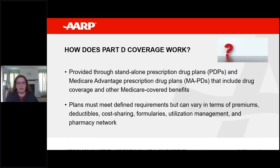There are actually two types of private plans that provide coverage under Medicare Part D. One is a standalone prescription drug plan, or PDP, that just provides coverage for prescription drugs. The other is a Medicare Advantage prescription drug plan, which provides drug coverage plus other Medicare benefits. The plans have to meet some defined requirements, but there is a lot of variation between plans — premiums, whether the plan has a deductible, the types of cost sharing, whether it's a flat co-payment or co-insurance where you pay a percentage of the drug's price, the formularies, which drugs are covered and how, and utilization management such as prior authorization or step therapy. Many of the plans also have pharmacy networks that include preferred pharmacies, so you can get lower cost sharing if you go to a preferred pharmacy.